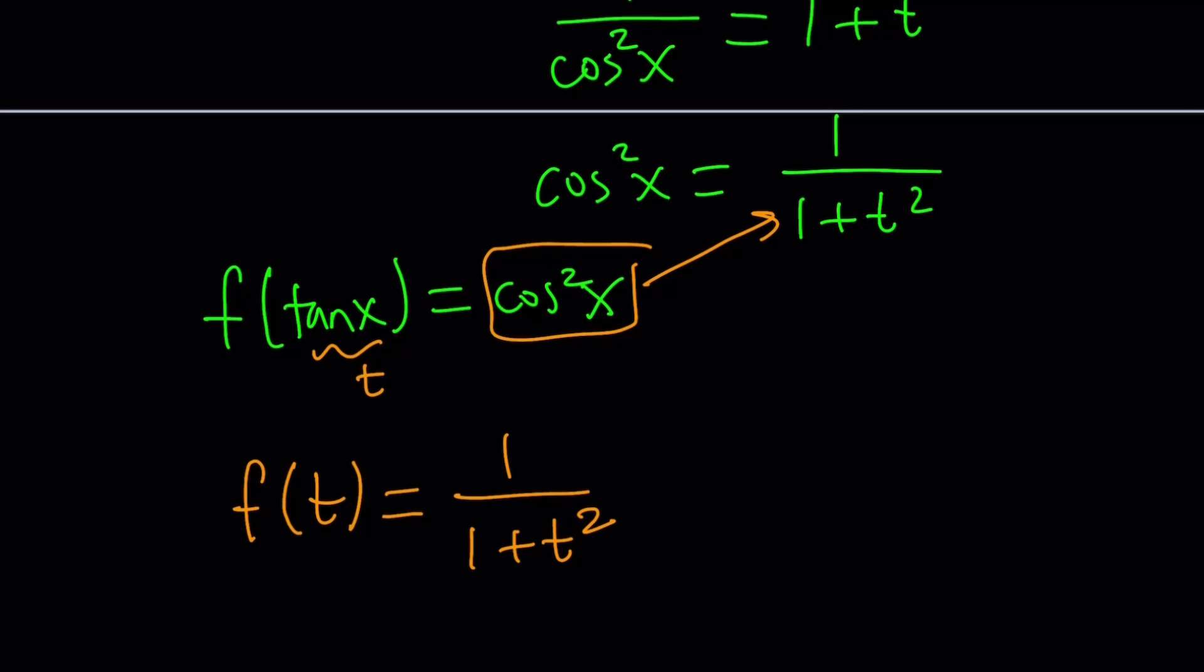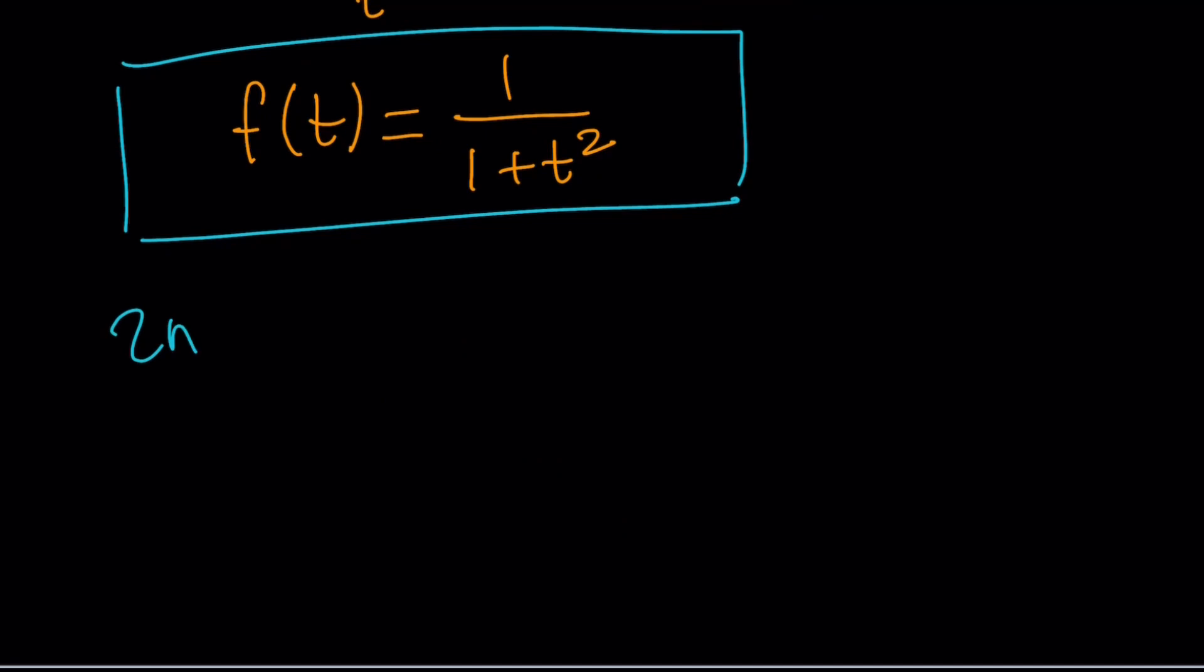So, this gives me 1 over 1 plus t squared. In other words, f of tangent x equals cosine squared x gives us, this becomes t, and this becomes that. So, we get f of t equals 1 over 1 plus t squared. And, all of a sudden, I just realize that this is the derivative of arc tangent.